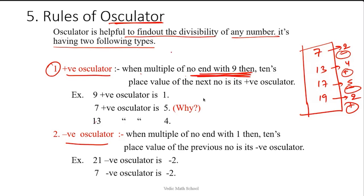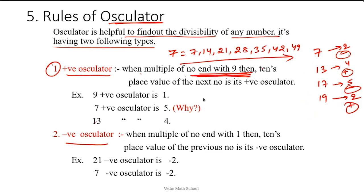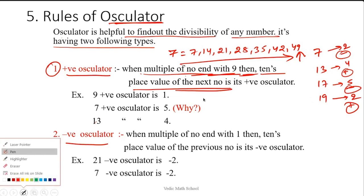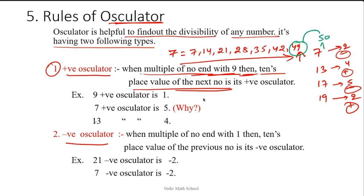First we have to understand what a multiple is. What are the multiples of 7? — 7, 14, 21, 28, 35, 42, 49. In these multiples of 7, the number ending with 9 is 49. That is the first number ending with 9. Then we take the tens place value of the next number — 50. So the positive osculator is 5, and this is called the positive osculator.